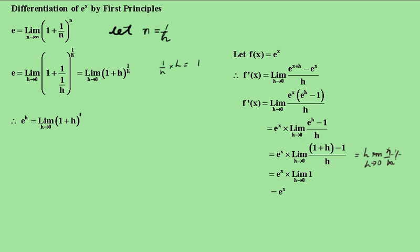This would mean that all this is just going to be 1 because 1 is independent of h. So therefore the result becomes e to the x. What a nice little proof that the derivative of e to the x is e to the x.